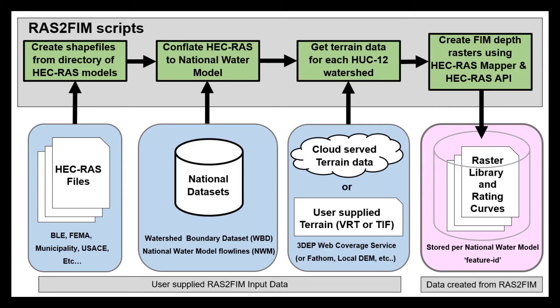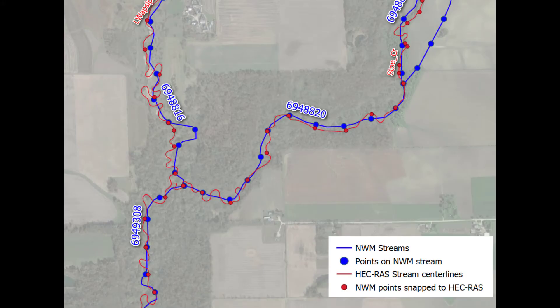RAS2FIM combines the use of programmatic geospatial tools with the HEC-RAS API to create flood inundation raster stacks keyed to the National Water Model Hydrofabric. In this example, we note that stream 6948820, defined in the National Water Model, contains a portion of the Stow Creek HEC-RAS model. RAS2FIM automatically clips the provided models to include only cross-sections that depict the corresponding National Water Model reach.